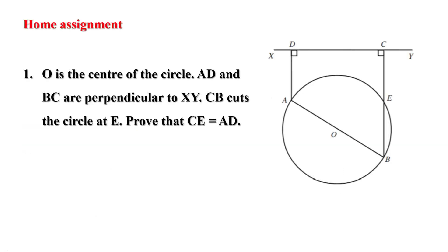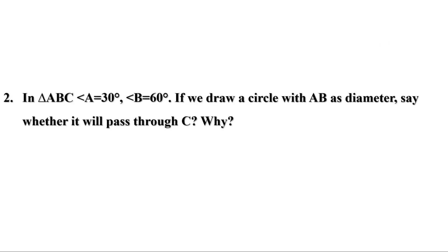Today we have done some problems. Now there are two homeworks. First: O is the center of the circle, AD and BC are perpendicular to XY, and CB cuts the circle at E. Prove that CE equals AD. Second: in triangle ABC, angle A equals 30 degrees, angle B equals 60 degrees. If we draw a circle with AB as diameter, say whether it will pass through C. Hope you have understood. Do the homeworks. I will be back with another video.